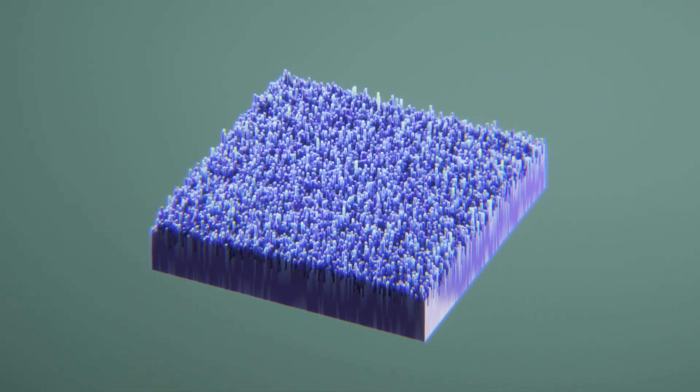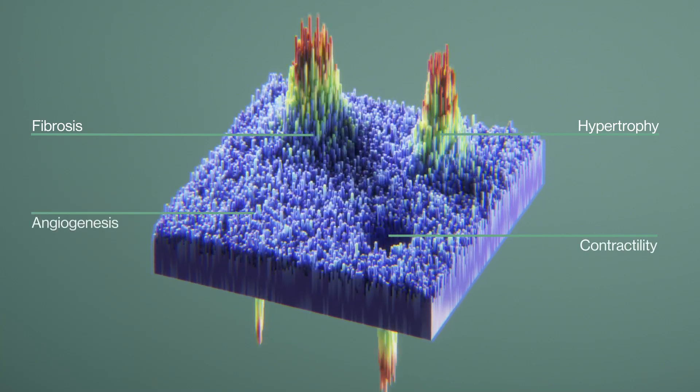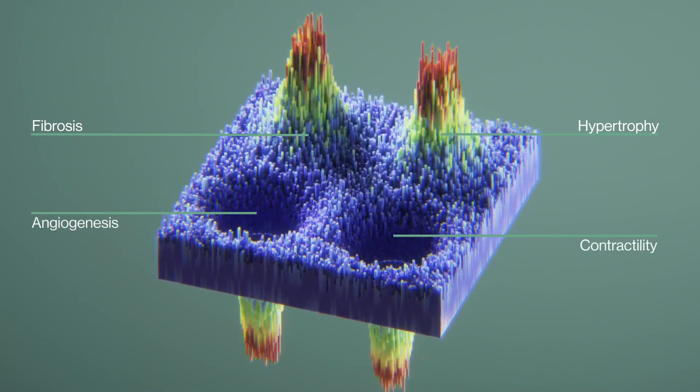The diagram shows signaling pathways that are pathologically modulated by the increased levels of microRNA-132.